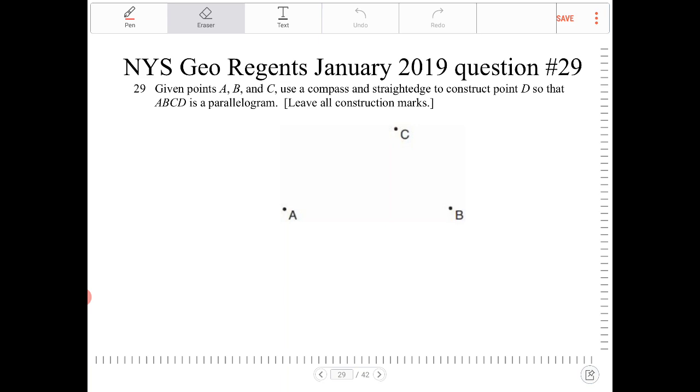What we're trying to do here is construct D so that ABCD is a parallelogram. Be aware, what I'm about to do is not the only way. In fact, there are three different answers to this question, depending upon how you want to locate D.